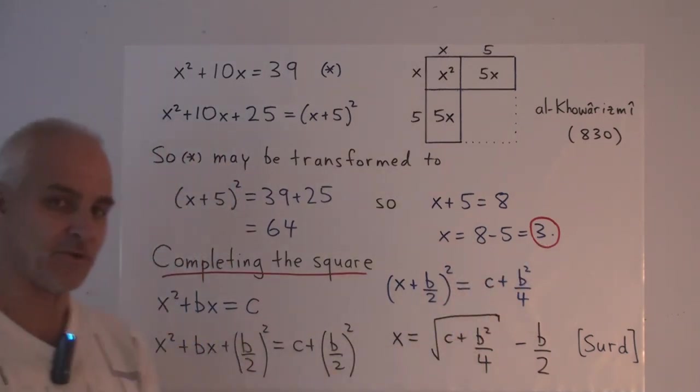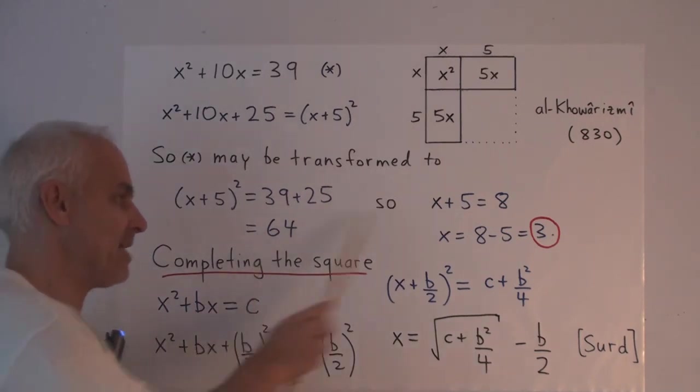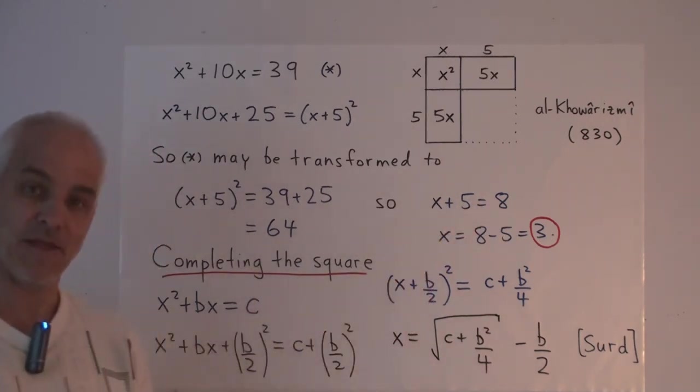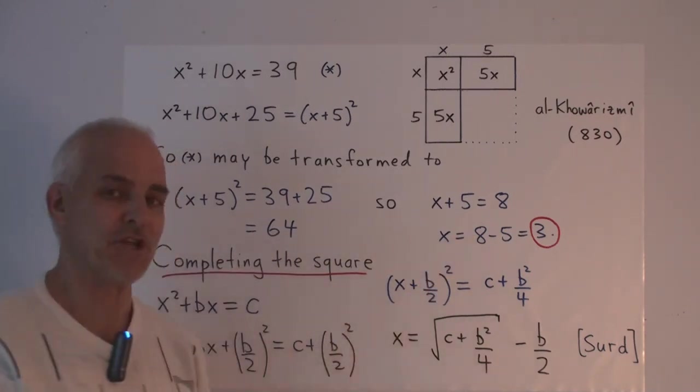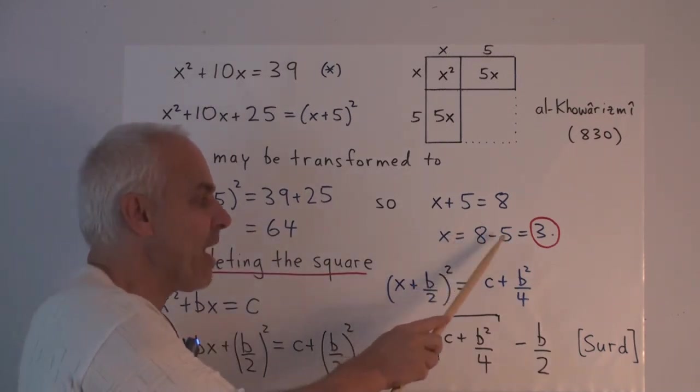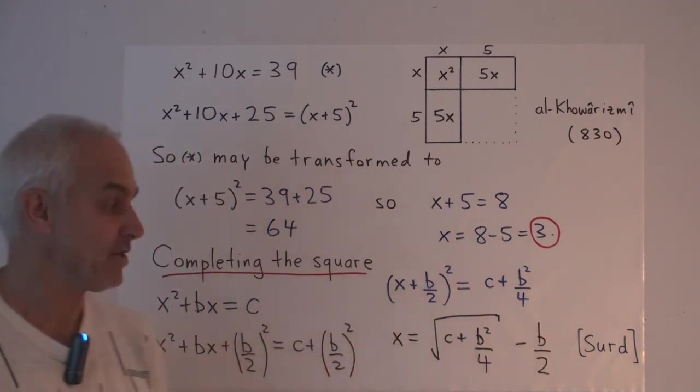Now there's another solution too, because we could also have chosen minus 8 as the square root of 64. And so there would be another solution here obtained by taking minus 8 minus 5, which is minus 13.